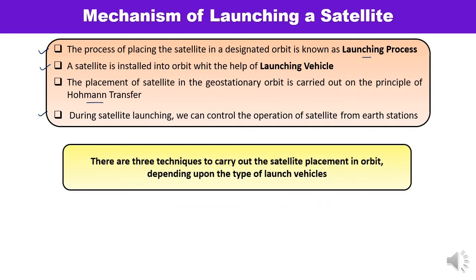Mainly there are three techniques or ways via which a satellite can be placed into the designated orbit, but it totally depends upon the type of launch vehicles. We need to understand what those three methods are via which a satellite can be launched. Let us discuss in detail.